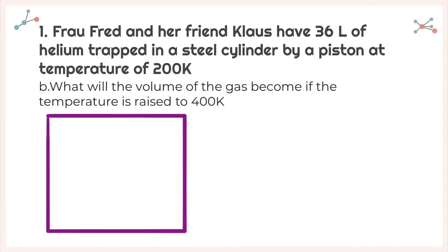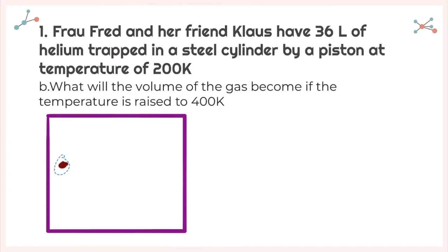Next one: we still have 36 liters of helium trapped at the same original temperature of 200 degrees Kelvin. However, now we're raising our temperature to 400 degrees Kelvin. If I add my particle, this is its speed at 200 degrees Kelvin — then at 400, it's going to go faster. Again, if I add more particles, the faster it goes, the more collisions there are going to be, and I'm going to need a bigger volume to hold all of them.